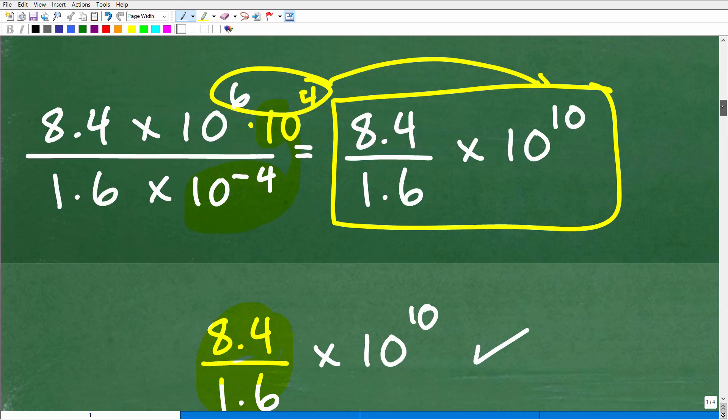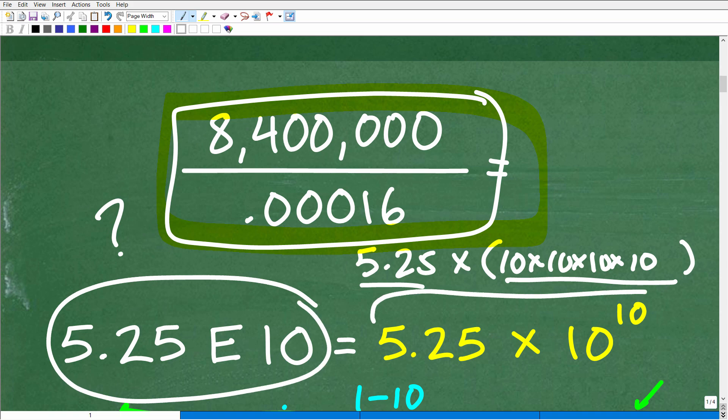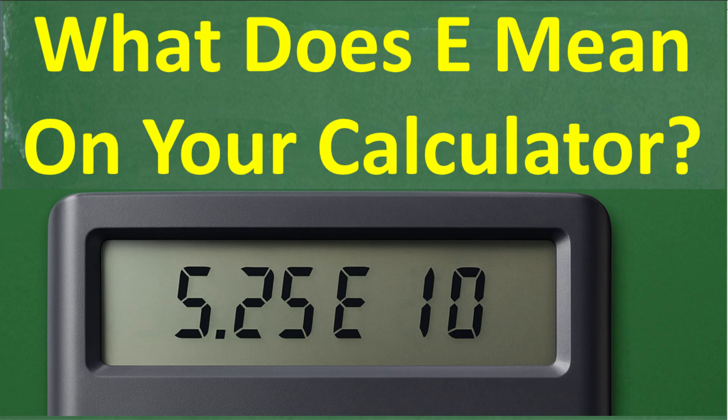If you didn't know scientific notation and just typed the problem into your calculator, you'd get 5.25E10 and wonder what it means — now you know. Being able to interpret numbers in scientific notation is very important. Hopefully this video was informative. When you're struggling with math, try to maintain a positive attitude and a natural curiosity about the subject — it makes learning much more effective. Best of luck in your mathematics adventures, thanks for your time, and have a great day!